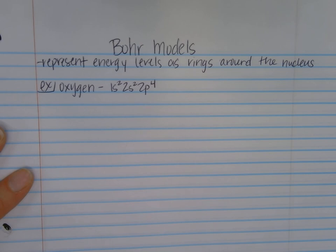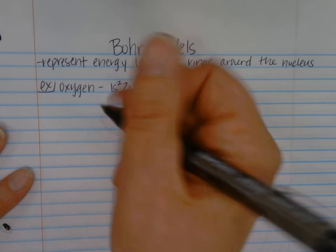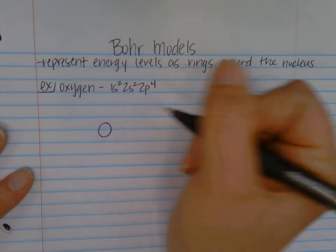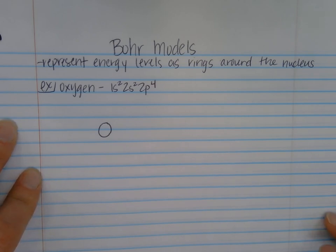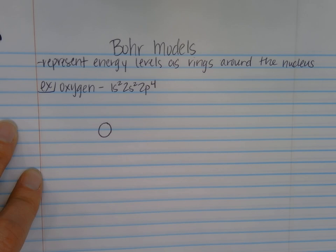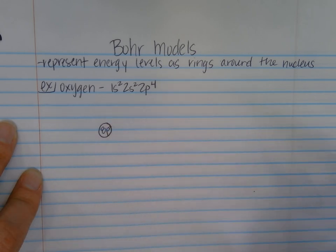You may have learned previously the 2-8-8 model, where two on the first ring, eight on the second ring, eight on the third. While that does have some basis in truth, it's not the entire truth. We really want to look at the electron configuration because that will tell us how many electrons to represent as dots on our Bohr model. So the first thing I'm going to do is draw a nucleus — just a circle in the middle — and inside the circle I'm going to write how many protons there are. I'm not going to write neutrons because we don't know the mass number or isotope. All oxygen atoms will have eight protons, so I'm going to write 8p+ to represent our protons.